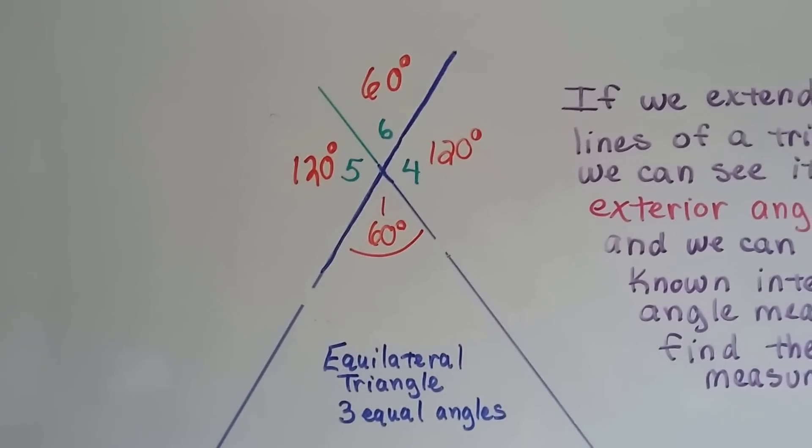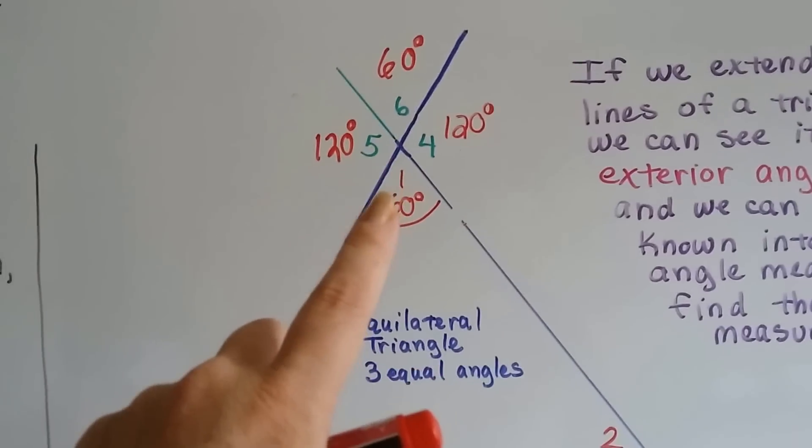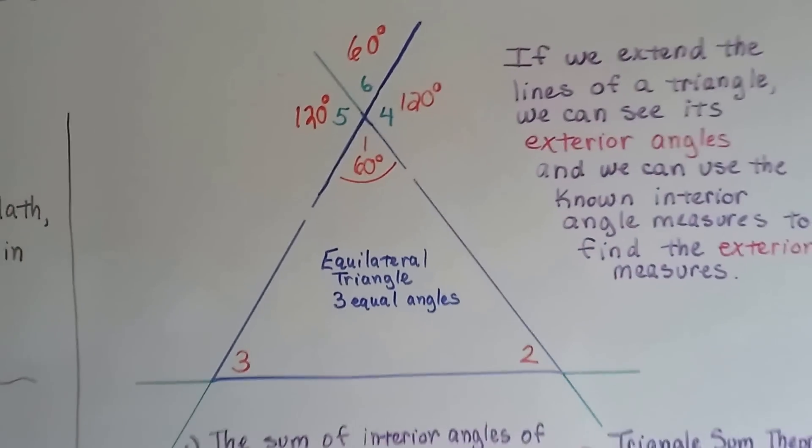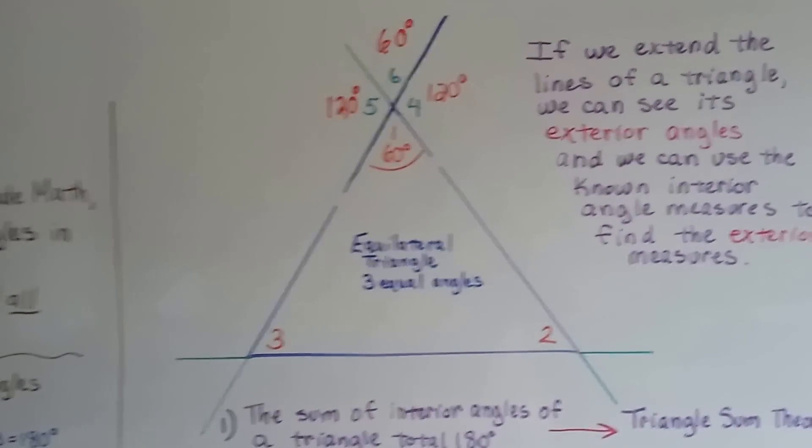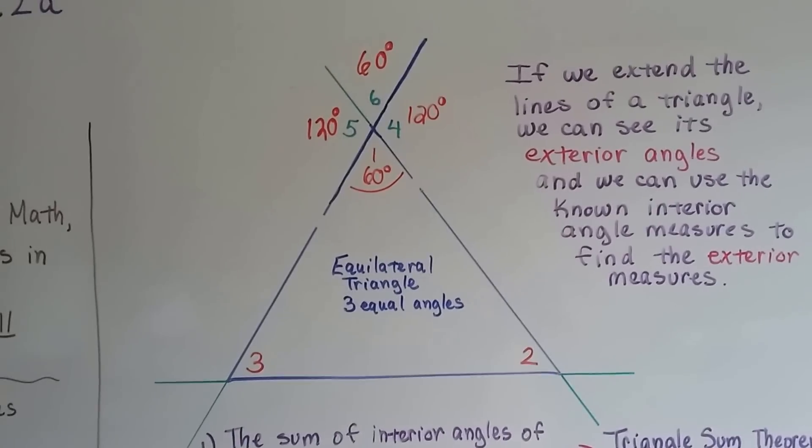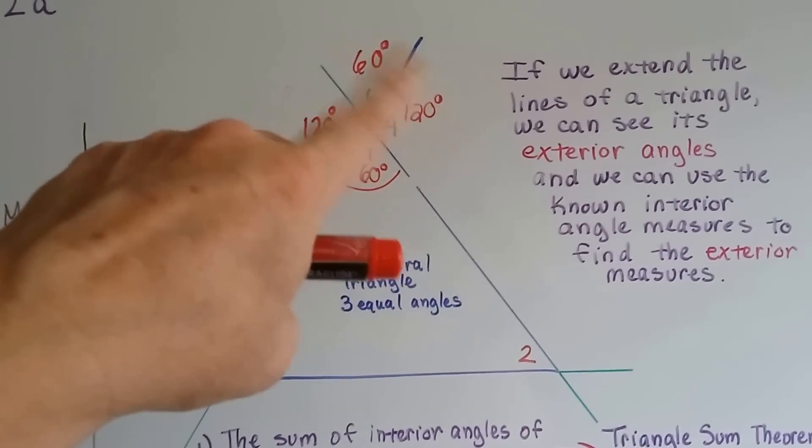Well, we're going to talk about that more in the future. But right now, we know what those angle measures are. We know that angle 4 and angle 5 are 120 degrees, and angle 1 and 6 are 60 degrees. So we know our exterior angles.